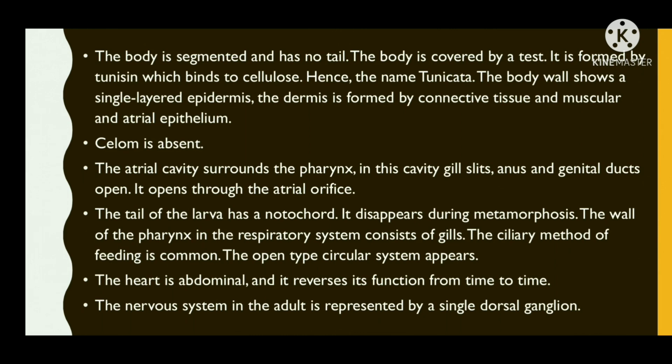The body wall shows a single-layered epidermis; the dermis is formed by connective tissue and muscular and atrial epithelium. Coelom is absent. The atrial cavity surrounds the pharynx; in this cavity, gill slits, anus, and genital ducts open. It opens through the atrial orifice. The tail of the larva has a notochord, which disappears during metamorphosis. The wall of the pharynx consists of gills.